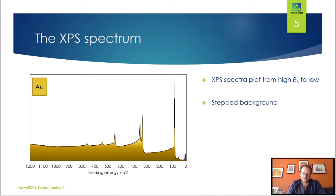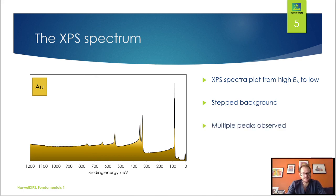We've got a stepped background — after each peak, there's an increase in the overall level of the background. We're going to come onto this in one of the next parts of this course. And we can see a couple of peaks — there's not just one peak, so we need to figure out what these peaks are.